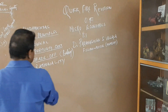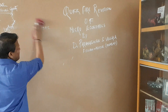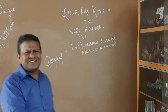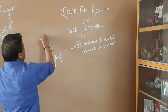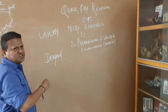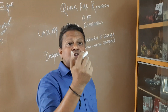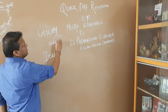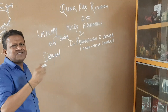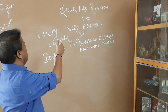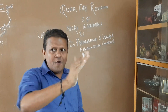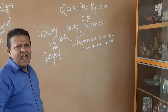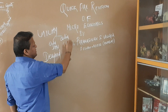We start microeconomics with demand functions. Demand for a product is actually needed because of the utility attached to it, so the very starting point is utility. There are two schools of thought: the ordinal school of thought and the cardinal school of thought. The cardinal school of thought says that utility can be measured, but the ordinal utility says that no, utility cannot be measured — it can only be ranked. The relevant laws are the law of diminishing marginal utility and the indifference curve.